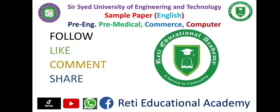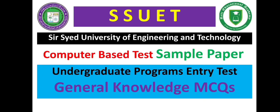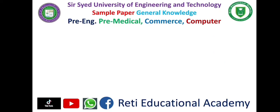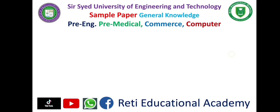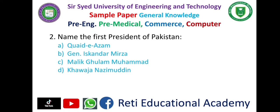Subscribe Rethi Educational Academy YouTube channel and follow us on TikTok, WhatsApp and Facebook. General Knowledge MCQs: Question 1: Rohtas Fort was built by — A. Babar, B. Akbar, C. Shah Jahan, D. Shershah — and the correct answer is D. Shershah. Question 2: Name the first President of Pakistan — A. Quaid-e-Azam, B. General Iskandar Mirza, C. Malik Ghulam...